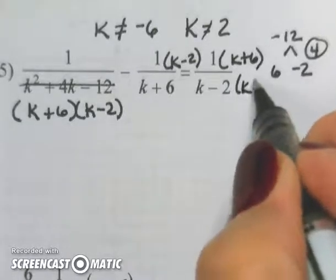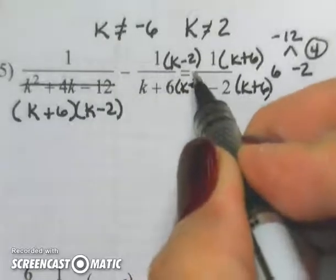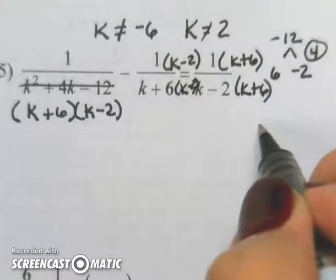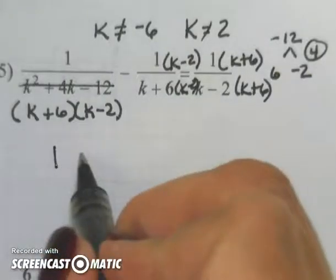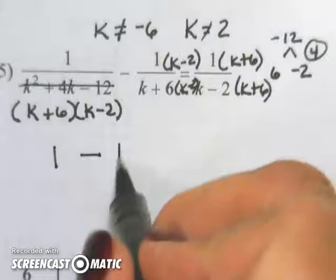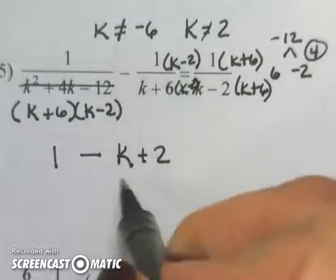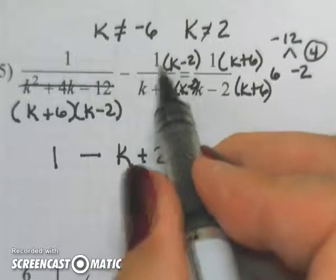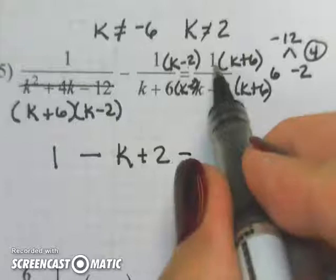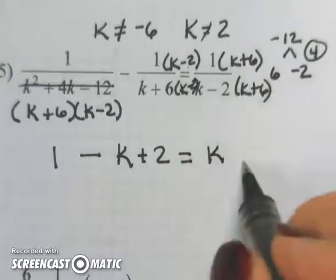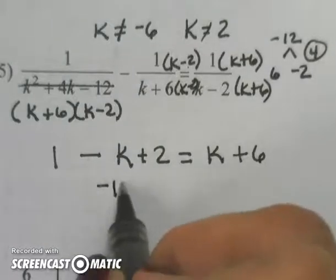That's on top and bottom. Now that I have both of these on all three, I'm not going to worry about denominators anymore. 1 minus k plus 2. Negative 1 times k is negative k. Negative 1 times negative 2 is positive 2 equals 1 times k and 1 times 6. Combine my terms.